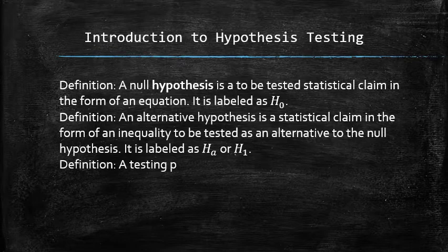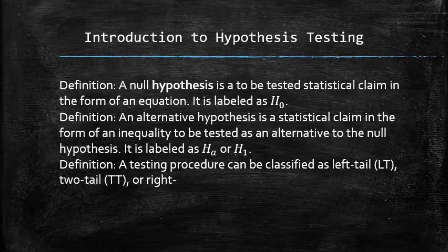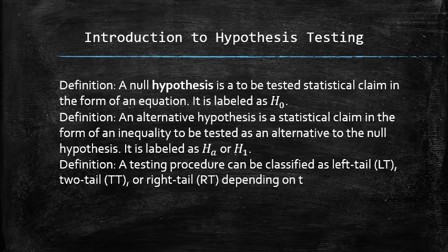A testing procedure can be classified as left tail, two tail, or right tail depending on the inequality used in the alternative hypothesis.